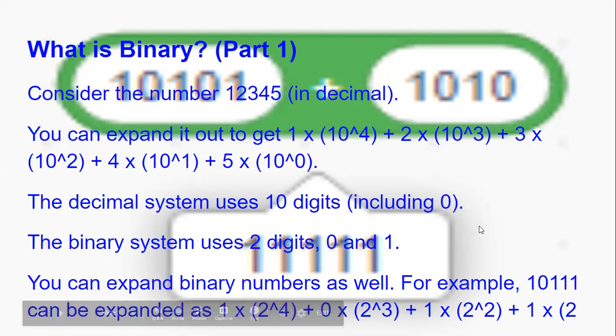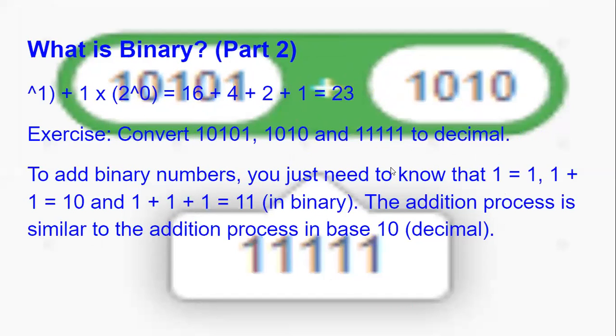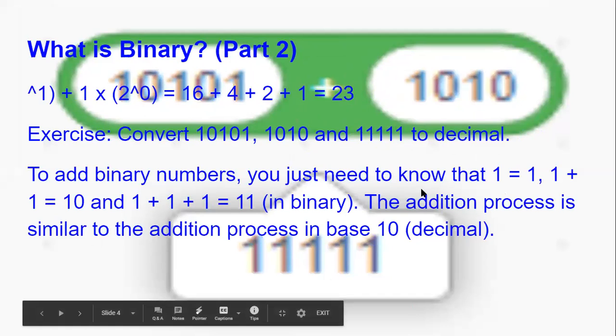You can expand binary numbers as well. For example, 10111 can be expanded as 1×(2^4) + 0×(2^3) + 1×(2^2) + 1×2 + 1, which equals to 23 if you bother to calculate it. Now convert 10101, 1010, and 11111 to decimal.